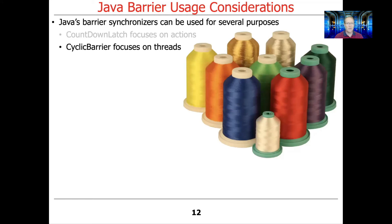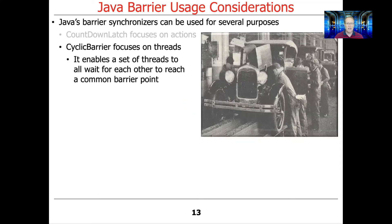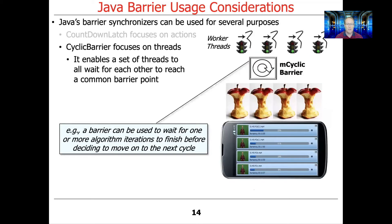Cyclic barrier focuses on threads — or what they call parties — as opposed to actions. It enables a set of threads to all wait for each other to reach a common barrier point. An example would be a barrier used to wait for one or more algorithm iterations to finish before moving to the next cycle. We also used it as an entry barrier in assignment 4a, to ensure all threads doing the being-gazing operations started at the same point so nobody got a head start.